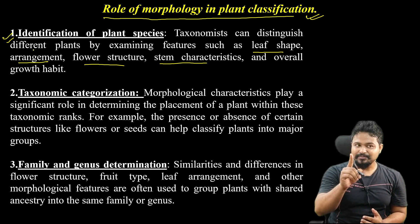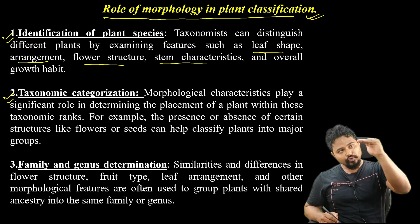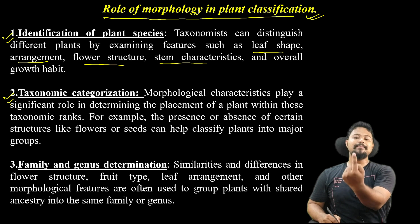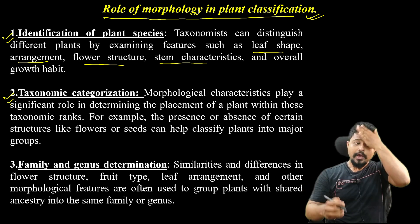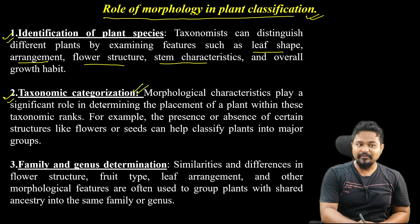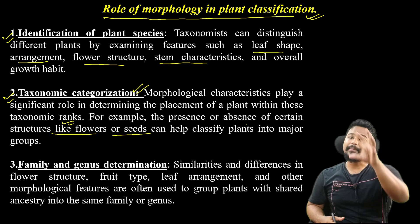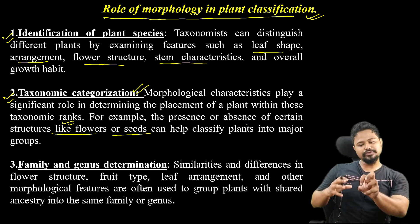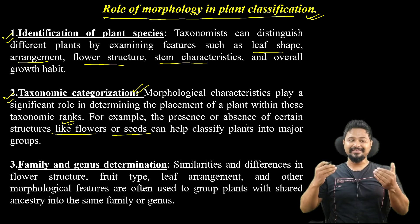So identification of plant species is the first role. The second role is taxonomic categorization — classifying plants into family groups and species. The placement of a plant within taxonomic ranks depends on morphological features; for example, the presence or absence of certain structures like flowers or seeds. If a plant has naked seeds, it is a gymnosperm; if seeds are covered, it is an angiosperm.